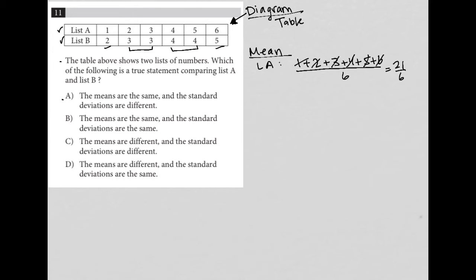21 divided by 6, if you throw that into your calculator, is 3.5. And then for list B, LB, the mean would be 2 plus 3 plus 3 plus 4 plus 4 plus 5, all over 6.